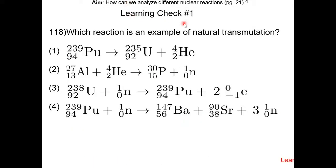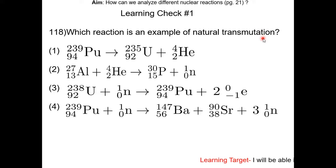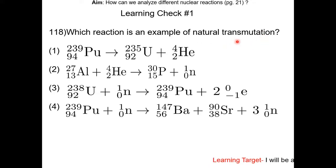Learning trick number one: which reaction is an example of natural transmutation? Pause the video and resume once completed. Natural transmutation has one reactant, therefore the answer is choice one.